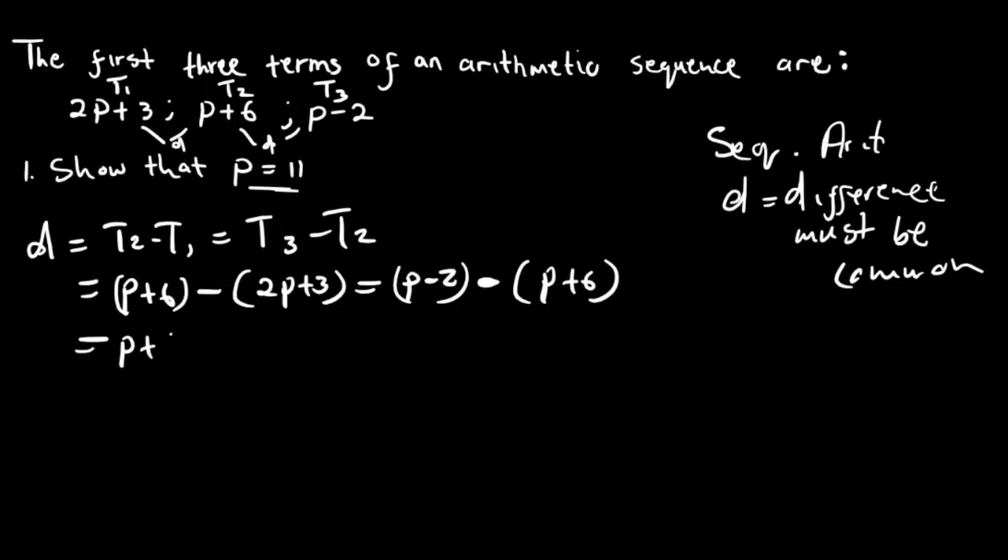So then we're going to say p plus 6, and then the minus will multiply everything that is inside here. So we have minus 2p minus 3 is equal to p minus 2, the minus multiplies everything here. So here we have minus p minus 6, and then we add the like terms. So it's going to be minus p, and this one here, it's going to be plus 3, which is equal to the like terms here, cancel out. Then we add this one here, minus 2 and minus 6, which is minus 8.